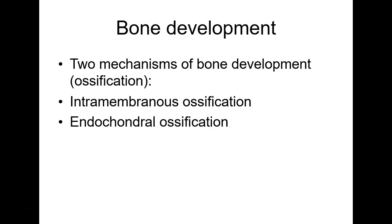We've talked about the two types of bone: spongy and compact. Now we're going to talk about how bone develops. So two mechanisms of bone development — also called bone ossification. You have intramembranous ossification and endochondral ossification.